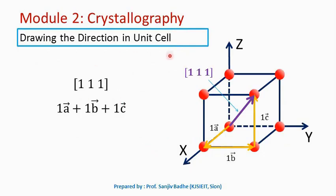How to draw a direction in a unit cell? Let us take this example: direction [1 1 1]. This direction is nothing but a vector 1 a-bar plus 1 b-bar plus 1 c-bar drawn from origin.